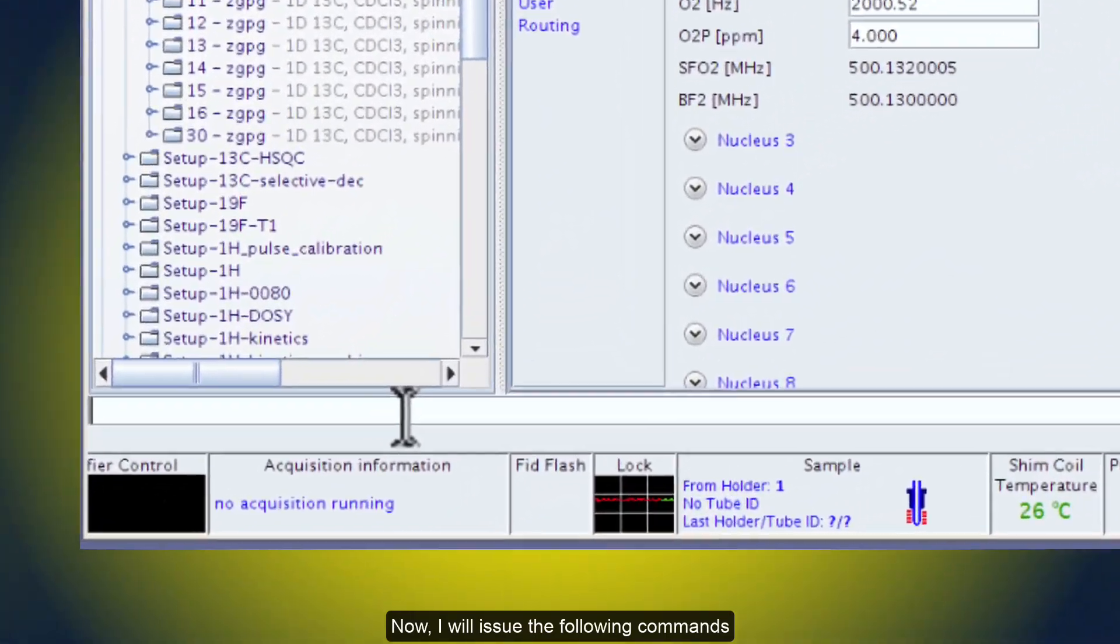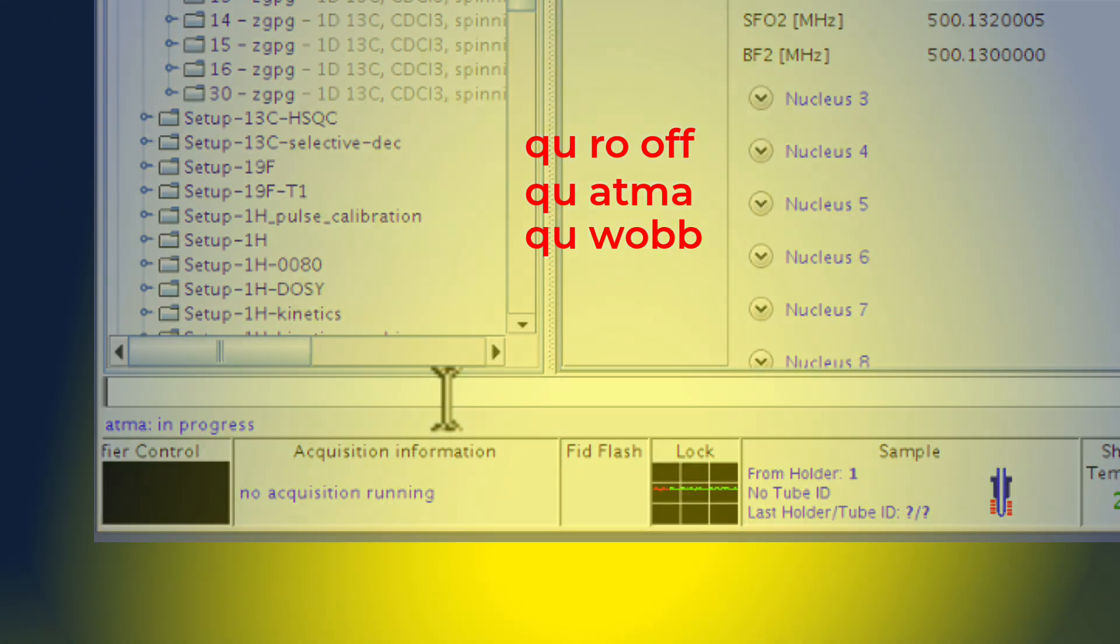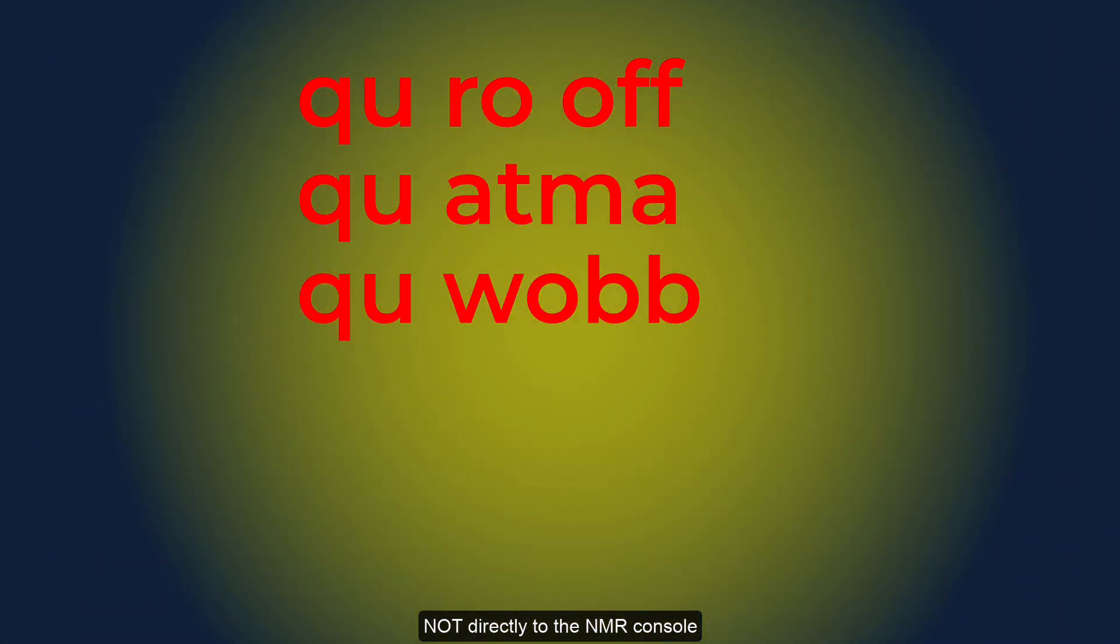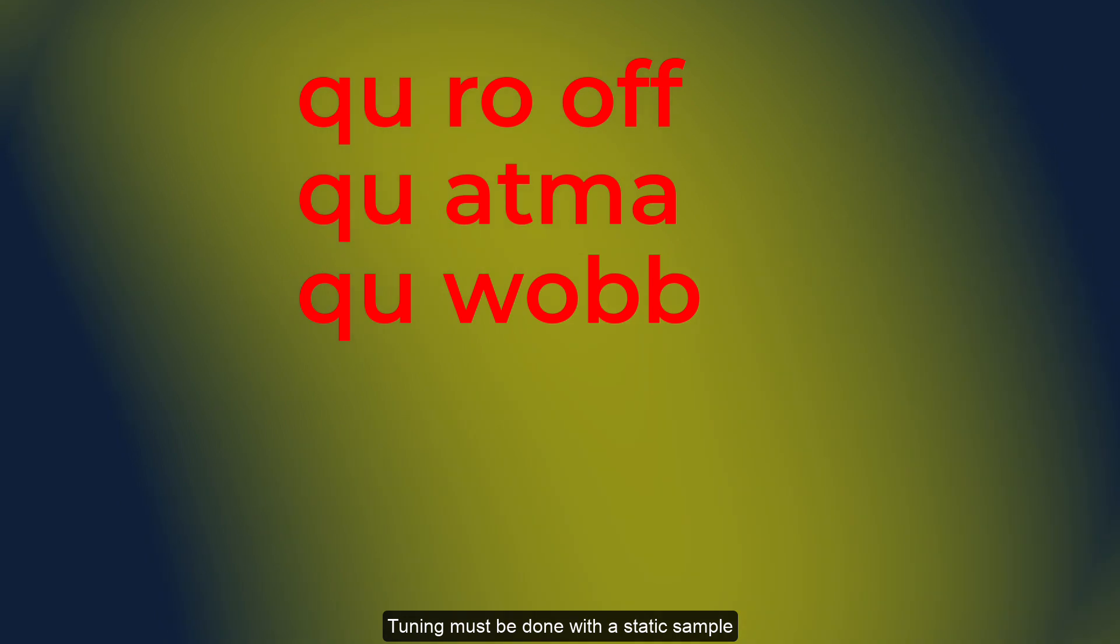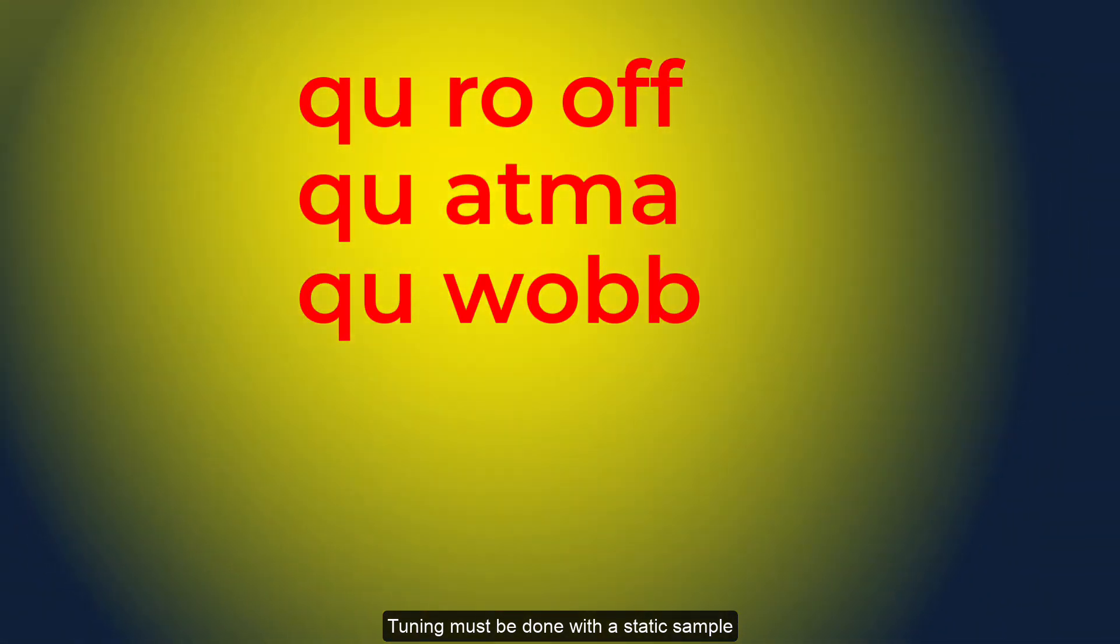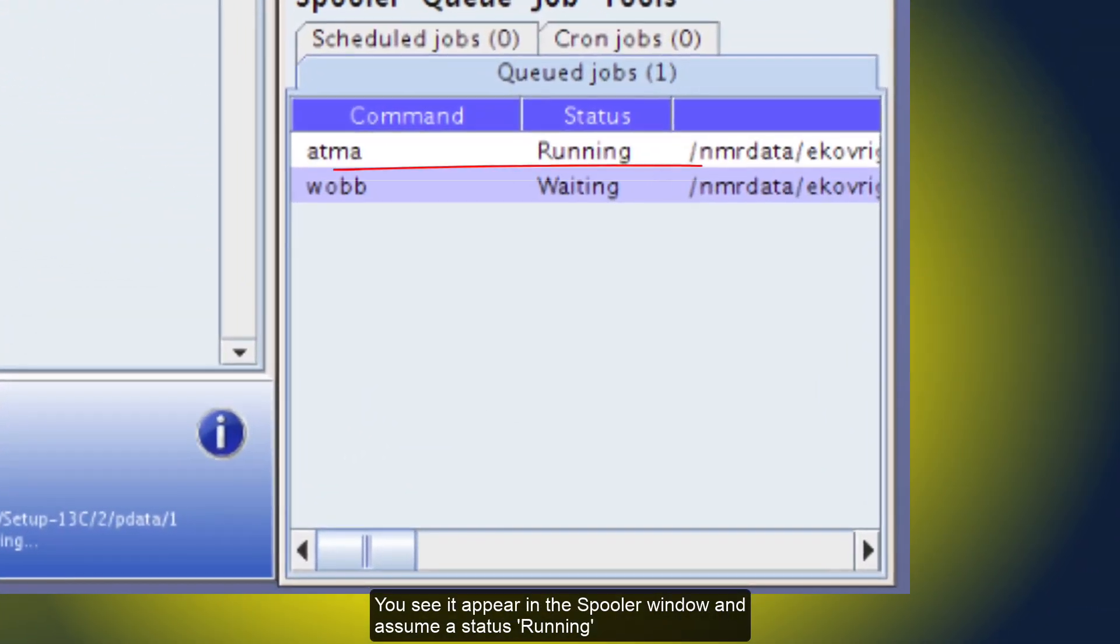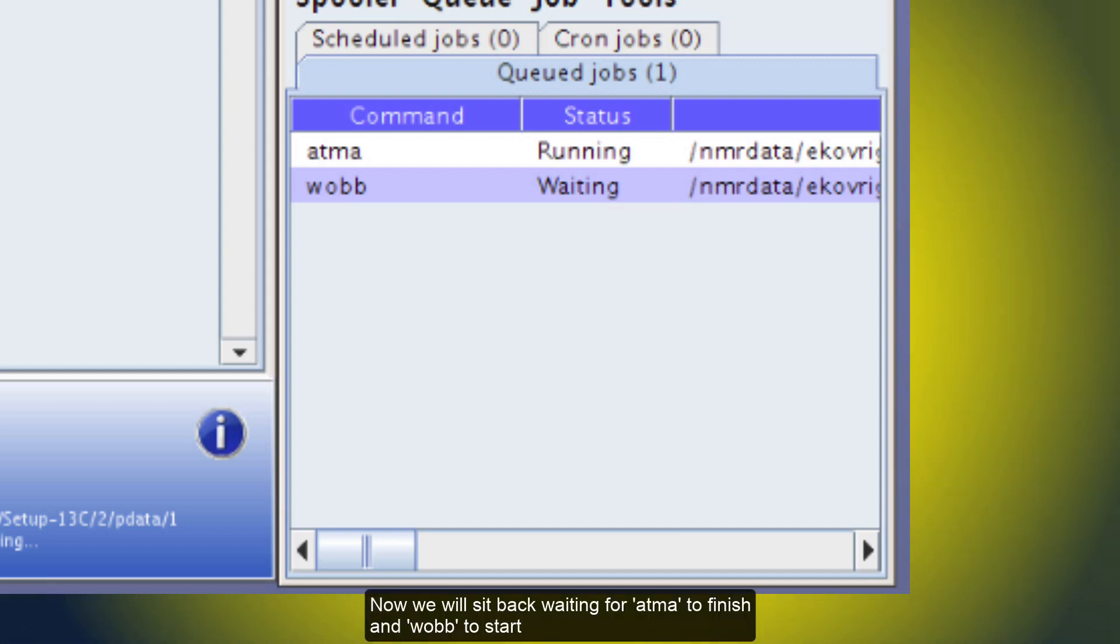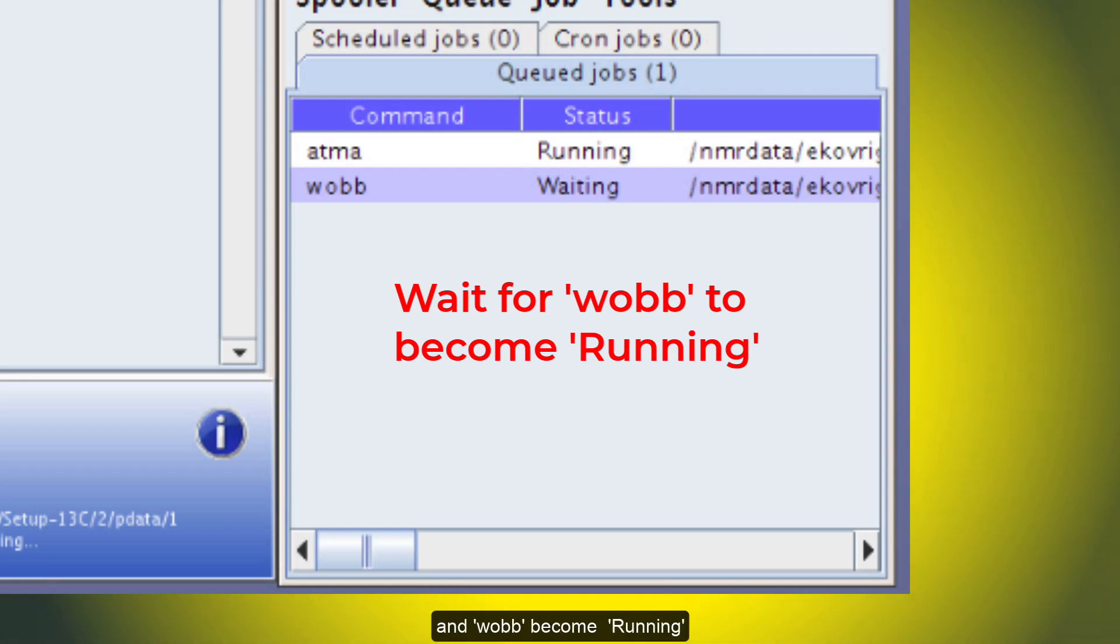Now I will issue the following commands: Q-RO-OFF, Q-ATMA, and Q-WOB. The preceding Q-U indicates that you are sending this command to the spooler, not directly to the NMR console. The first command will ensure that your sample is not spinning. Tuning must be done with the static sample. The second one calls for automatic tuning and matching procedure. You see it appear in the spooler window and assume a status running. The third one is a command that will help us verify how well the tuning job was done. Now we will sit back, waiting for ATMA to finish and Wob to start. We should see ATMA disappear from the spooler list and Wob become running.